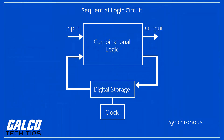The most common type has an input line called the clock and multiple output lines. The values on the output lines represent a number in the binary or BCD number system. Each pulse applied to the clock input increases or decreases the number in the counter.